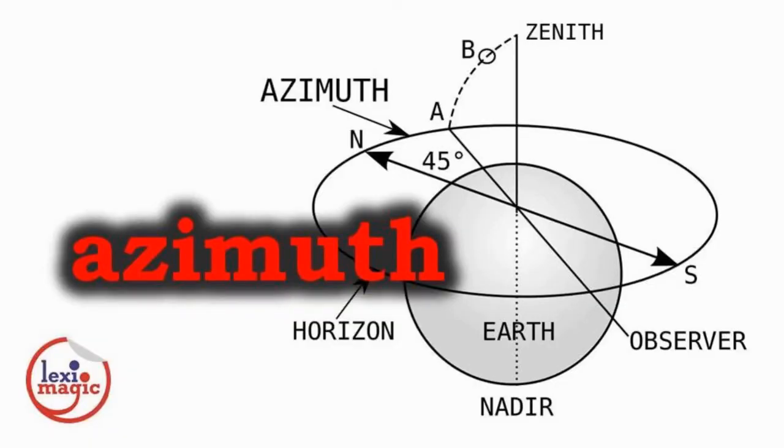Azimuth is the angular distance of a celestial body from the north or south point of the observer's horizon.